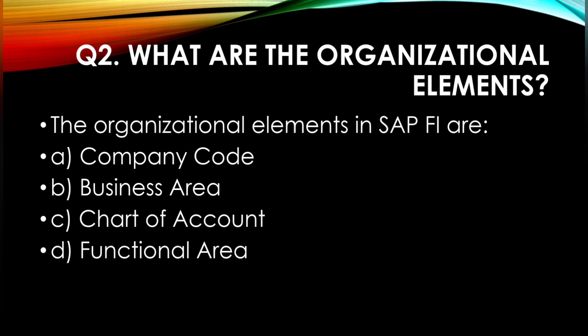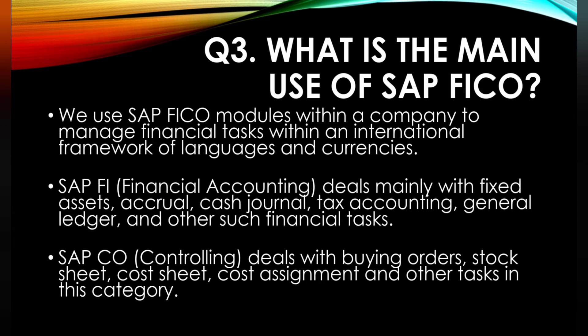The next question is: what are the organizational elements? The organizational elements in SAP FI are company code, business area, chart of accounts, and functional area. The next question is: what is the main use of SAP FICO? We use the SAP FICO module within a company to manage financial tasks within an international framework of languages and currencies.